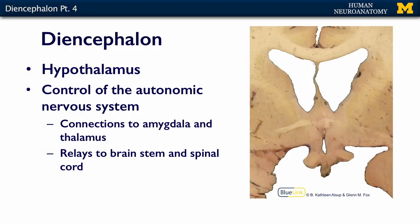The autonomics are controlled by the hypothalamus. Sympathetics are fight or flight; parasympathetics are rest and digest. The main control center for both of those systems is in the hypothalamus.